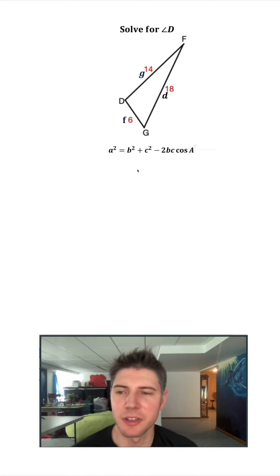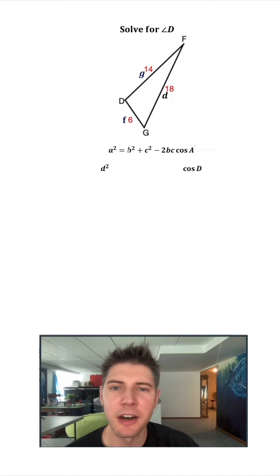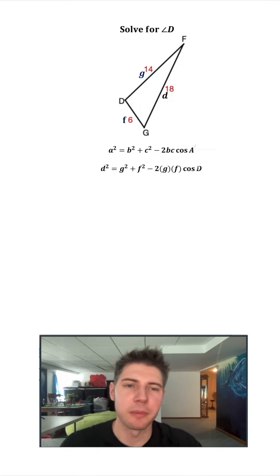Here's the law of cosines as you typically see it. Since we're trying to solve for angle D, we want this to be a capital D here instead of a capital A. And we need this side to be the side opposite of this angle. So we're going to write it as our lowercase d squared and our cosine D. And now our other two sides are G and F. So in the place of B and C, we're going to put G and F. We're trying to solve for D, so I'm going to drag that down.